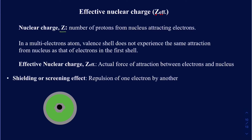Nuclear charge is just the number of protons inside the nucleus, and assuming all those protons will be pulling on the electrons surrounding the nucleus. However, whenever you have a multi-electron atom, the valence shell electrons, or even the electrons in the second or third shell, may not experience the same attraction as the electrons in the first shell from the nucleus. The reason is they are being shielded by the inner shell electrons, also called core electrons.